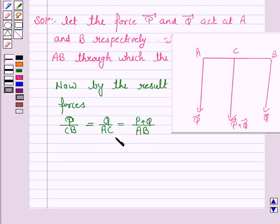Now using these two we have AC is equal to Q into AB upon P plus Q.